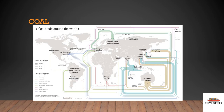Coal. Coal is an energy source. It is used for power generation and as a heat source in industrial processes, particularly steel making. Top coal exporters are Indonesia, Australia, the former Soviet Union, and North America.